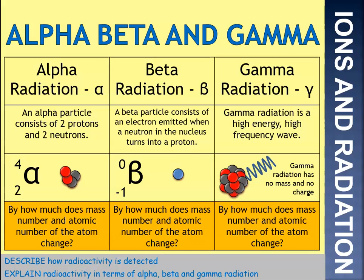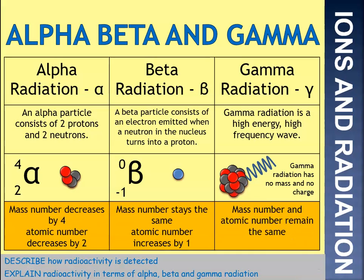Pause the video and copy down this table, and answer the three questions at the bottom. Alpha radiation consists of two protons and two neutrons — overall it's got a charge of plus two. It's represented by the Greek letter alpha, with a mass of four and an atomic number of two. If you were to emit that, the mass number would decrease by four and the atomic number by two.